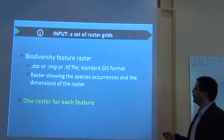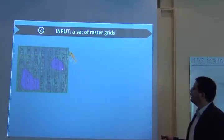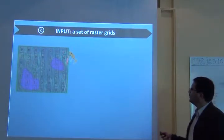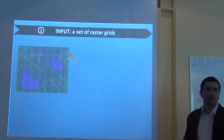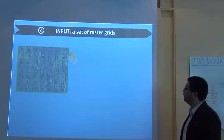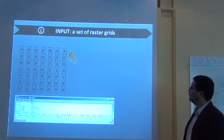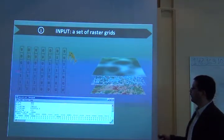You need to pre-process this in some kind of GIS software to generate the input map which I already said that you need one raster for each feature. So the raster is showing species occurrence and you need the dimension of the raster.